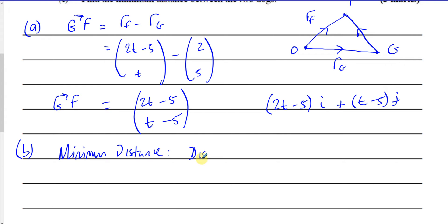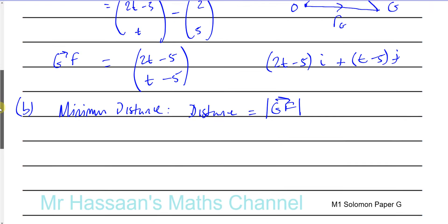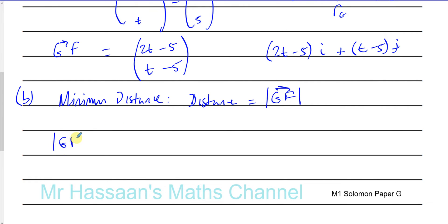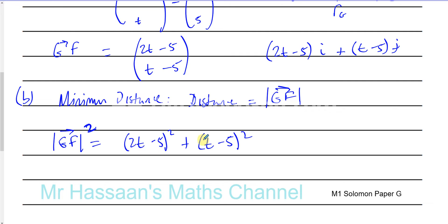The distance between the two dogs is going to be the magnitude of the vector between Growler and Fido. The magnitude of GF will give us the distance. So let's work out that first. The magnitude of G to F equals the square root of the i component squared plus the j component squared — so it's the square root of (2t minus 5)² plus (t minus 5)². This is the square of the distance between them, and I'll call that D.